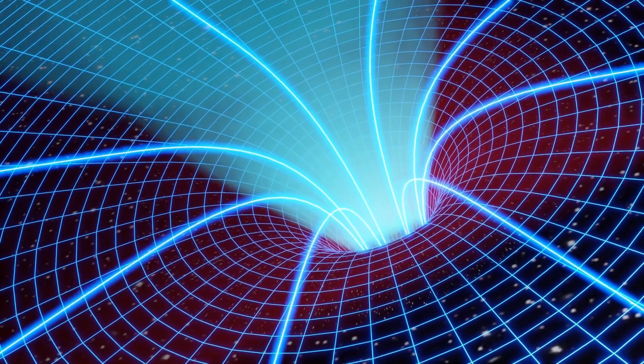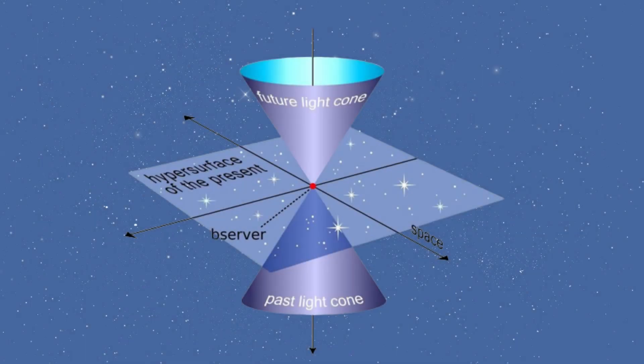Einstein's General Theory of Relativity, published in 1915, provides a modern geometric understanding of gravity. It defines gravity as a property of four-dimensional space-time, where the curvature of space-time is determined by matter and energy.